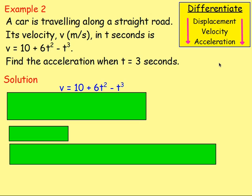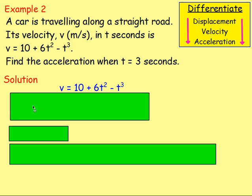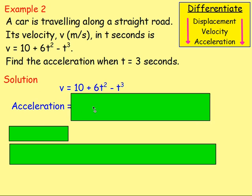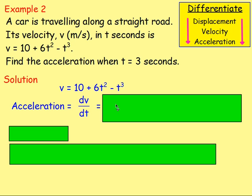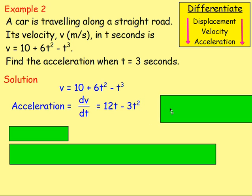Example number two: a car is travelling along a straight road. Its velocity in t seconds is v = 10 + 6t² − t³. Find the acceleration when t = 3. Here we're given a formula for the velocity and want to find the acceleration. Remember, acceleration is the rate of change of velocity, so acceleration = dv/dt. Differentiating v gives 12t − 3t².